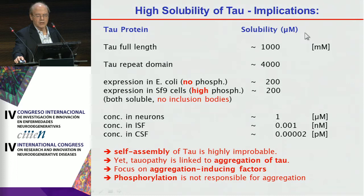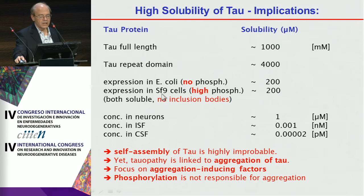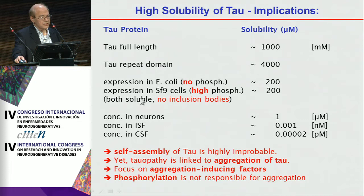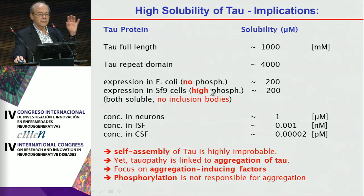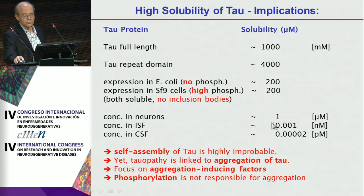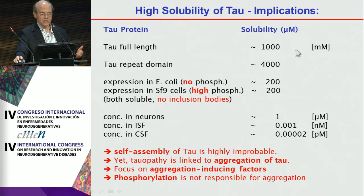To back up this point, solubility studies show: tau full-length is soluble to about 1,000 micromolar; the repeat domain to about 4,000 micromolar; expressed in E. coli or Sf9 cells it reaches about 200 micromolar — and in both cases it is totally soluble. This proves that high phosphorylation does not necessarily drive tau into aggregation. The concentration of tau in neurons is about 1 micromolar, and if a protein is soluble to 1,000 micromolar, you expect no aggregation — and that is what happens.